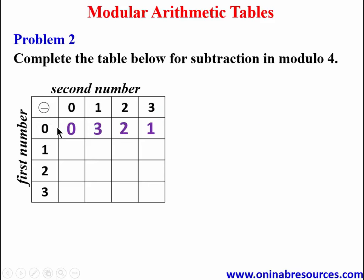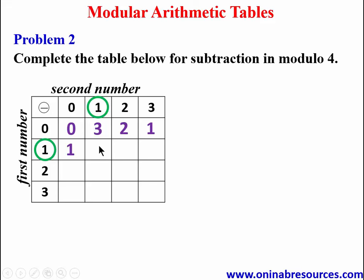We go to the next row, picking first number 1. Then 1 minus 0 is 1 — no special manipulation — so we record 1. Then 1 minus 1 is 0, we record 0, no further manipulation needed.